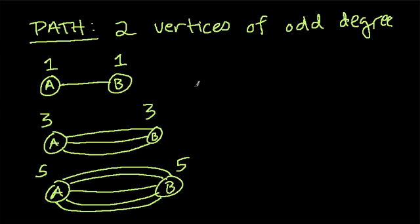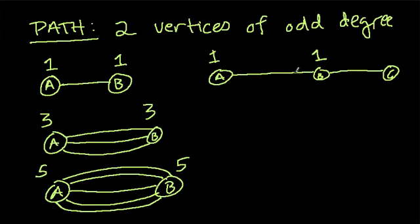And we could extend the amount of vertices if I have A and B and C. To go from A to B to C, which is a path, I've created three vertices. B has a degree of two, because there are two edges. And C has a degree of one, which is two vertices with an odd degree. And we can keep going.